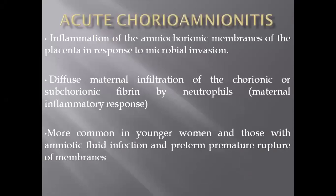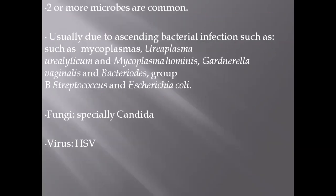Acute chorioamnionitis is by definition the inflammation of the amnionic chorionic membrane of the placenta in response to microbial invasion. This type of inflammation is mainly from the maternal side — the infection or inflammatory reaction starts from the maternal side and goes towards the fetal side.